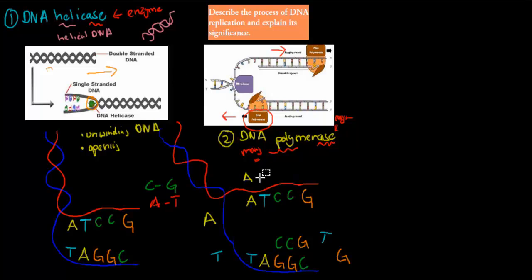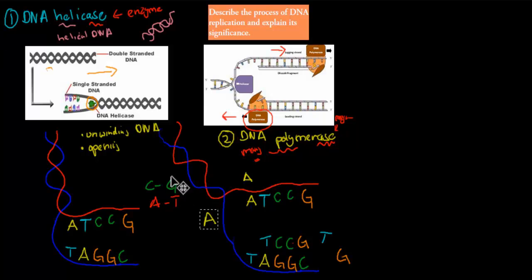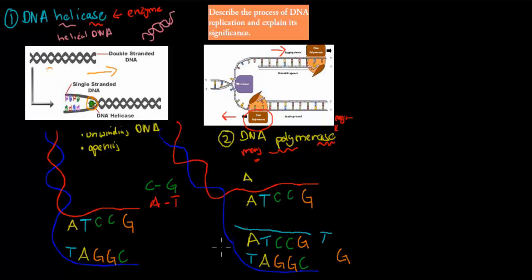You can see it grabs these nucleotides and makes a second strand that is identical to the first — just a carbon copy — all the way to the end. One polymerase will go in one direction, and the other one will do the same thing in the opposite direction, so that side will also be copied.